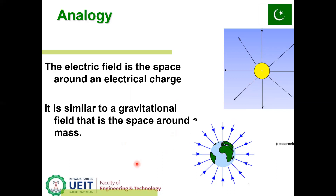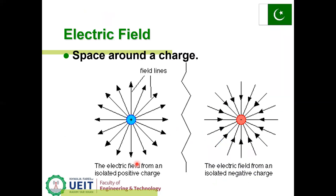The space around a charge where we can experience some force is called the electric field region. Electric field lines are the force lines. For positive charges, the electric field lines appear outside the sphere of the positive charge, and for negative charges, the electric field lines go into the sphere of the negative charge.